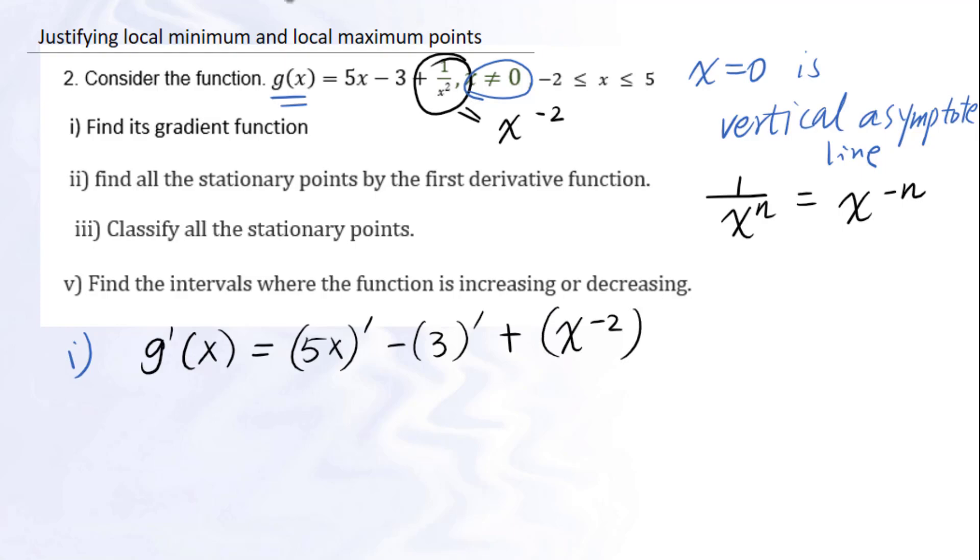Use the power rule of derivative equals n times x to the nth power. So we have 5 minus 0 plus drop down negative 2. Then x to the negative 2 minus 1 is the negative third power. Simplify, 5 minus 2 times 1 over x third power. Simplify again, 5 minus 2 over x to the third power.